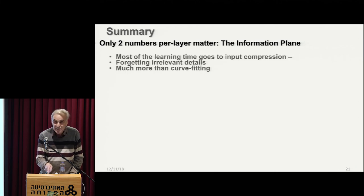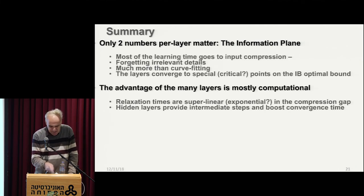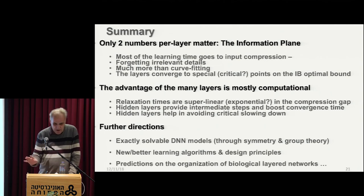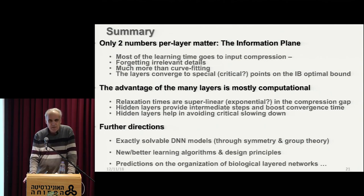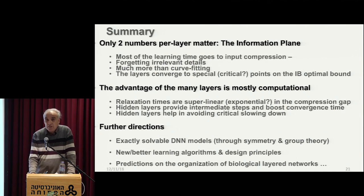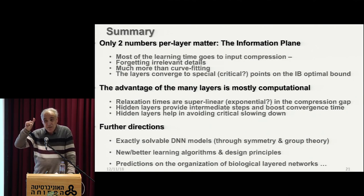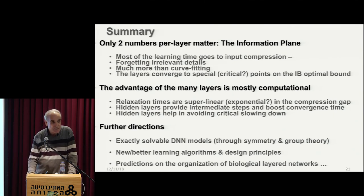So essentially what we said: there are two main mathematical results. The first — what I call the information plane theorem — tells you that for large enough problems, it's only the mutual information of the encoder and the optimal decoder which tell you the story about generalization accuracy. This by itself is interesting. And then there are all these dynamic issues.